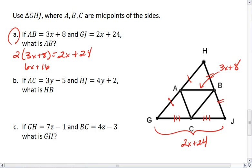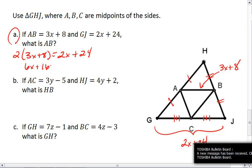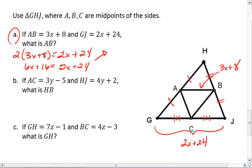We get 6X plus 16 equals 2X plus 24, which means that 4X equals 8, X equals 2.